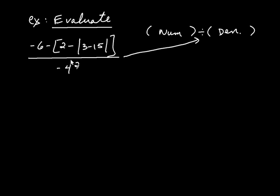Whatever stage you're at in GEMDAS in the numerator is totally independent from what you're doing in the denominator. So let's look at the numerator — applying GEMDAS, I see brackets and those are grouping symbols, but I also have the absolute value, which are grouping symbols as well. Within these grouping symbols you apply GEMDAS, and I see another set of grouping symbols, so I focus on the innermost grouping symbols first — the absolute value. Within that, it's subtraction: 3 minus 15 is negative 12.